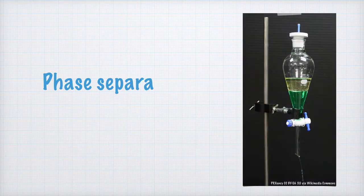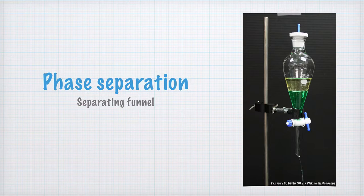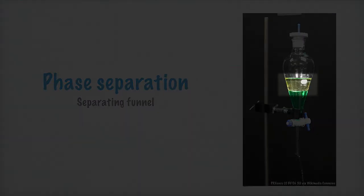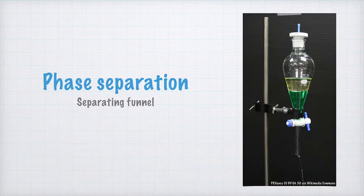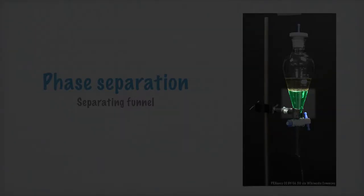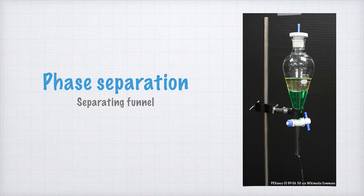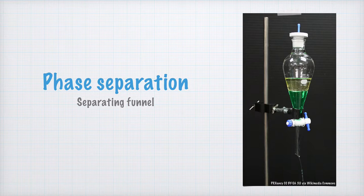You use a separation or separatory funnel like this one to separate liquids in different phases from each other. Up here there is some cooking oil, and down here there is some green colored water. By opening the tap down here, you can drain the water while the cooking oil stays in the funnel. This way you can separate the oil and the water from each other.